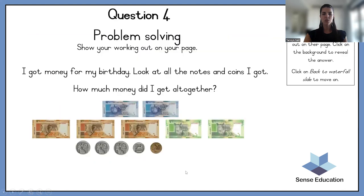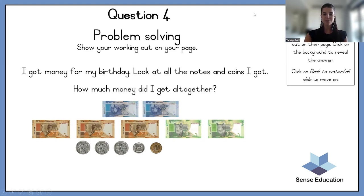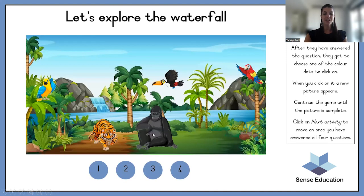I got money for my birthday — look at all the notes and coins I got. How much money did I get altogether? You need to add all the money together. The trick is to count all the notes first, then count the coins, and then add those two together — it's much easier. The answer is 287 rand 50 cents. That's how much money you got for your birthday! And the last picture is a gorilla — very cool.